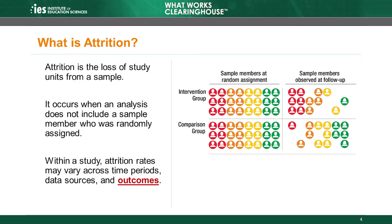Within a study, attrition rates may vary across time periods, data sources, and even different outcomes. The example illustrated here shows a study sample at random assignment and follow-up. The boxes on the left illustrate the full sample of 48 randomly assigned individuals, 24 in the intervention group and 24 in the comparison group.